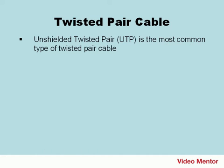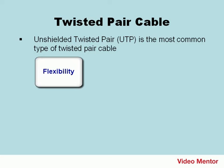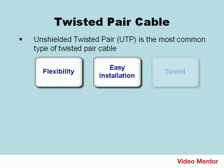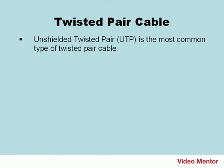Admins regularly use UTP cable, short for Unshielded Twisted Pair. This type of cable is the favorite among network admins because of its flexibility, easy installation, and speed. There is, however, some research you must do first so you know what wiring standard to use and what color sequence to work from.